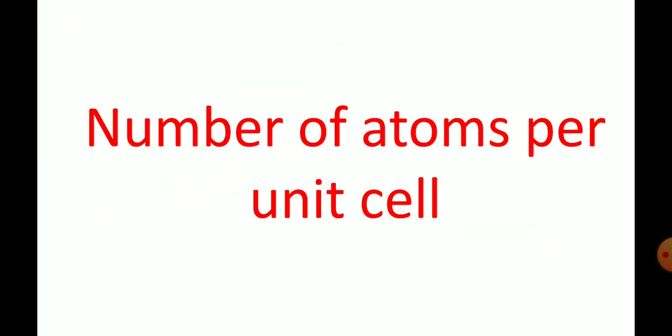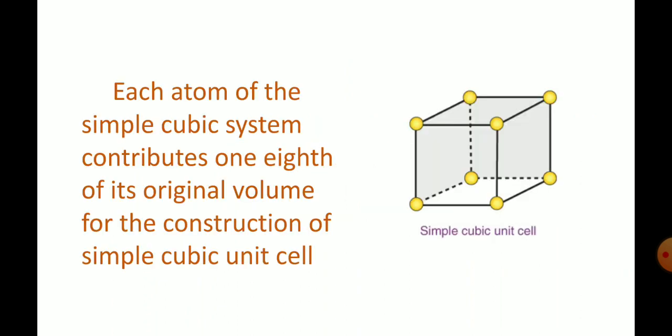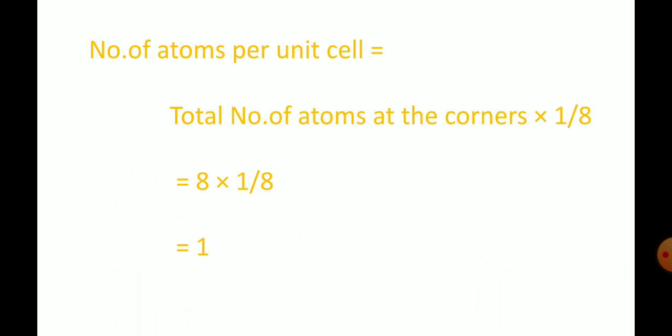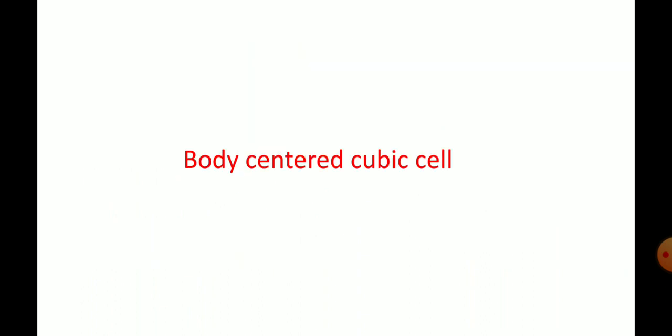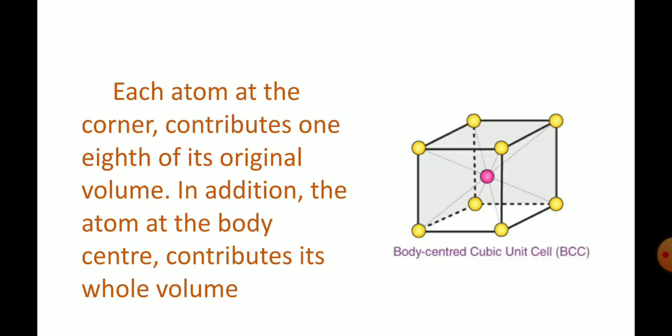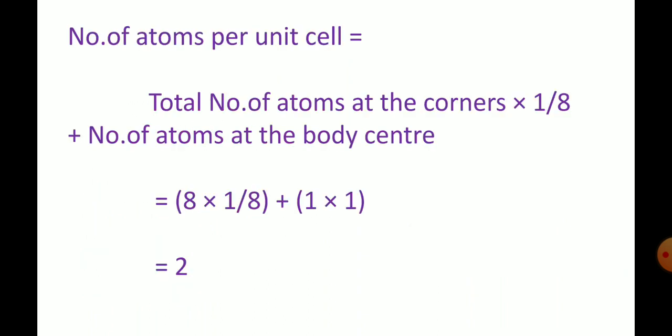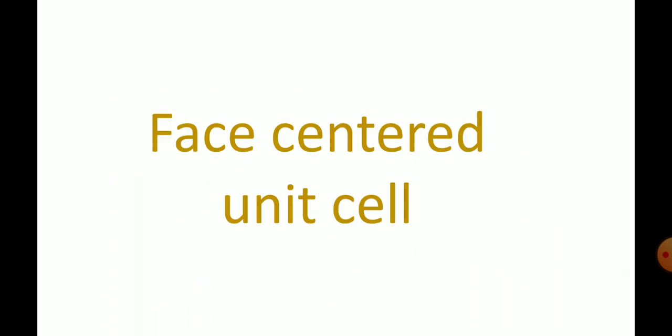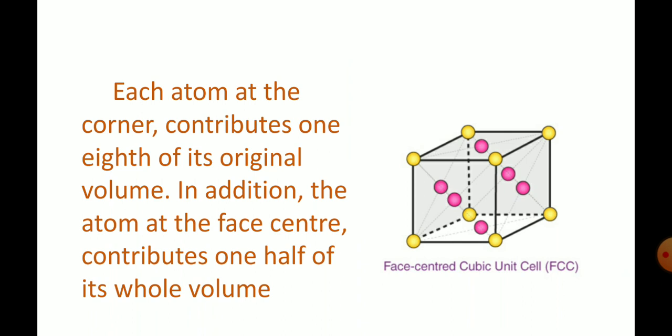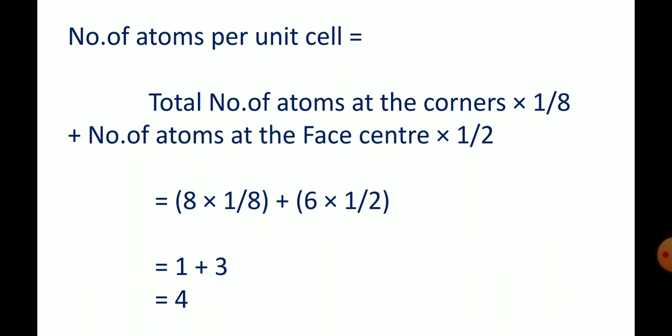To summarize: in the simple cubic system, atoms are only at the corners, giving one atom per unit cell. In the body centered cubic system, atoms are at the corners and the center of the cube, giving two atoms per unit cell. In the face centered cubic system, atoms are at the corners and the center of each face, giving four atoms per unit cell. This is a very important concept — you can watch the video twice for better understanding. Thank you.